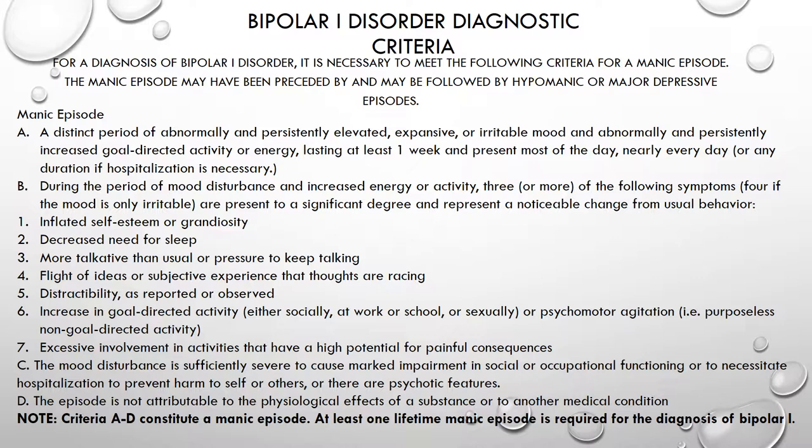Criteria C: the mood disturbance is sufficiently severe to cause marked impairment in social or occupational functioning, or to necessitate hospitalization to prevent harm to self or others, or there are psychotic features such as delusions or hallucinations. This is important because it differentiates a manic episode from a hypomanic episode — if it's manic, it's causing severe impairment or the person needs to be hospitalized. The episode is not attributable to the physiological effects of a substance or another medical condition. Criteria A through D constitute a manic episode, and at least one lifetime manic episode is required for the diagnosis of bipolar 1.